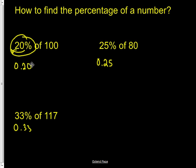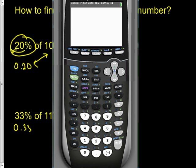Now what do we do with it? We now take the decimal and we times it by the number that we have. So 20% of 100, we take 0.20 and times it by 100. So again here's 0.20 times 100 and the result will be 20% of 100. 20% of 100 is 20.